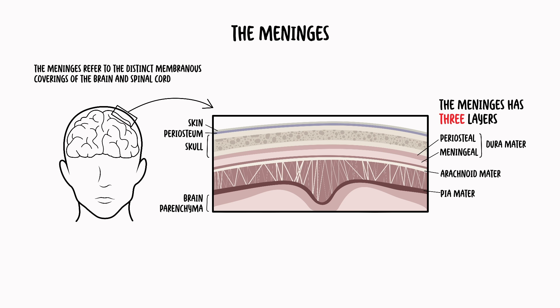The pia mater adheres directly to the surface of the brain and spinal cord. Other important parts include the subdural space between the dura mater and the arachnoid mater, as well as the subarachnoid space between the arachnoid mater and the pia mater. The subarachnoid space contains cerebrospinal fluid that helps with buoyancy of the brain.